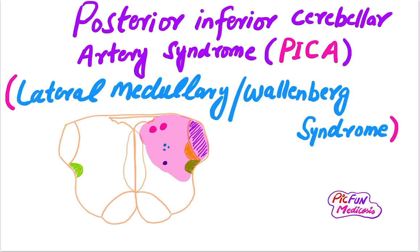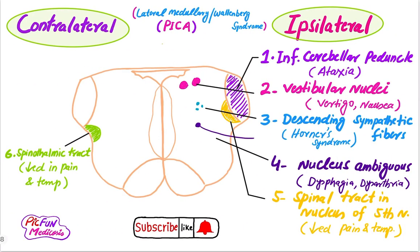Now I will discuss in detail the presentation of involvement of each part of the medulla oblongata. This is the cross-section of the medulla oblongata in posterior inferior cerebellar artery syndrome. There are ipsilateral findings and contralateral findings. Regarding the ipsilateral findings, these are due to the involvement of the inferior cerebellar peduncle.